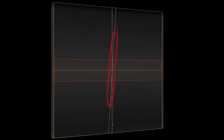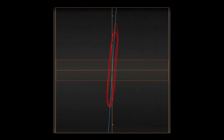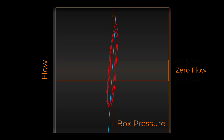The red or open shutter tracing is slightly different than the closed shutter loop. While the blue tracing represents mouth pressure over box pressure, the open shutter trace represents flow over box pressure. The middle horizontal line represents zero flow, while the upper and lower horizontal lines indicate plus and minus 0.5 liters per second flow.